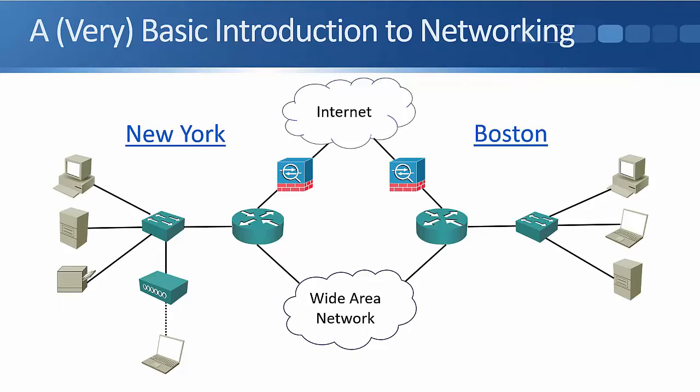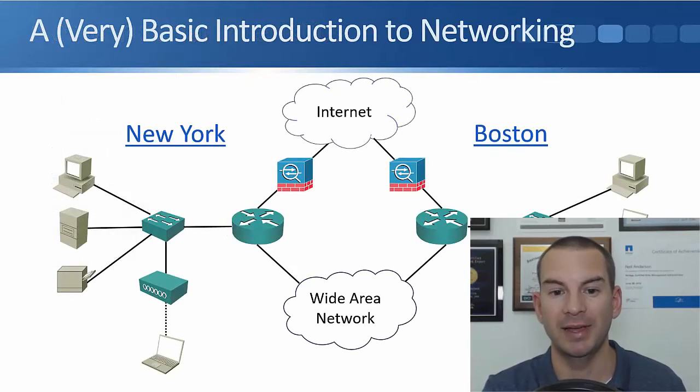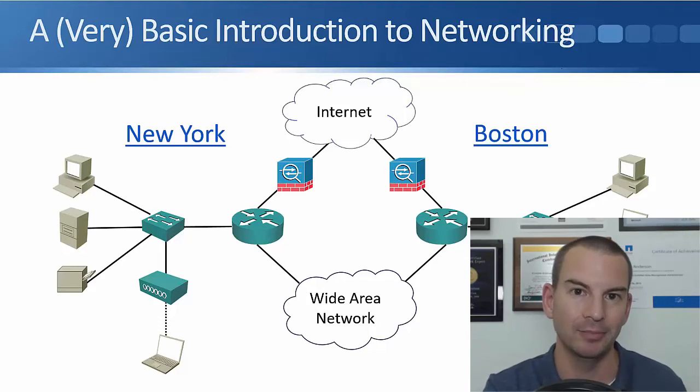And the point of networking is to allow that connectivity between our different end hosts on the network. So looking now at the characteristics of a network, we've got the topology. If I just go back to that previous slide, this is an example of a network topology diagram. The topology is how the devices are connected up to each other.